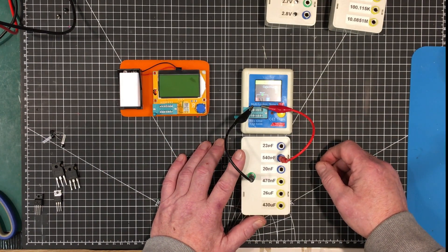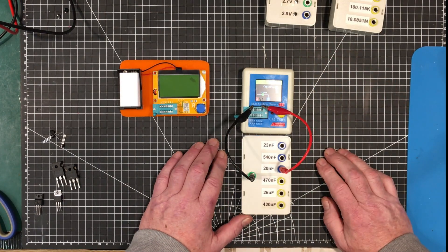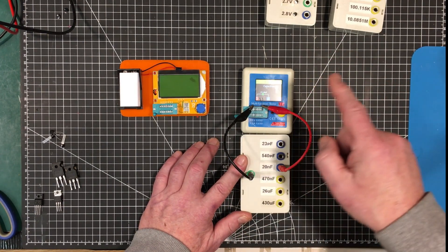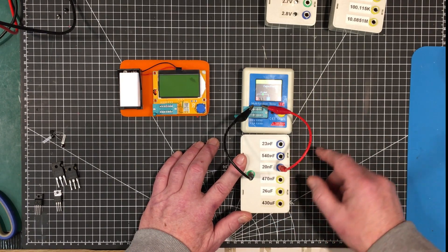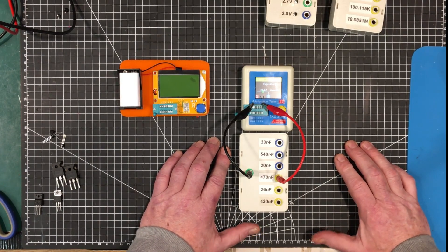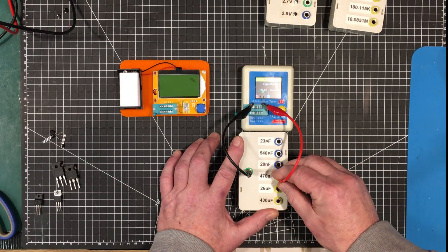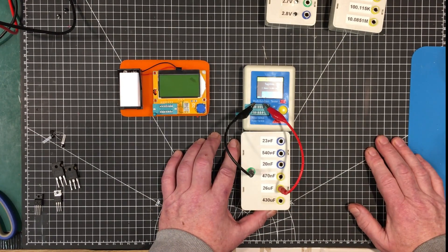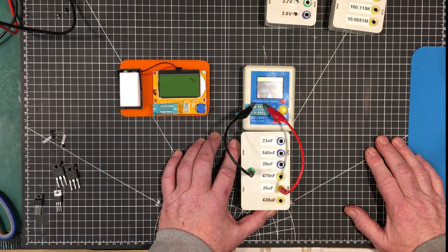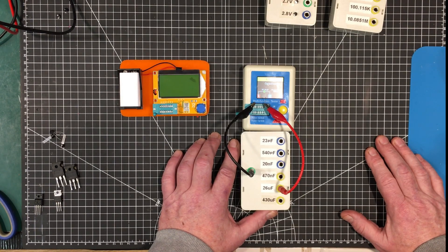This one's a little bit better here. 540 picofarads, coming up as 531. 20 nanofarads coming up as 17 and a half nanofarads. 20 nanofarads out. So that's about 4%, that's pretty close. It's taking a while and it is pretty good, 1.5 microfarads out.